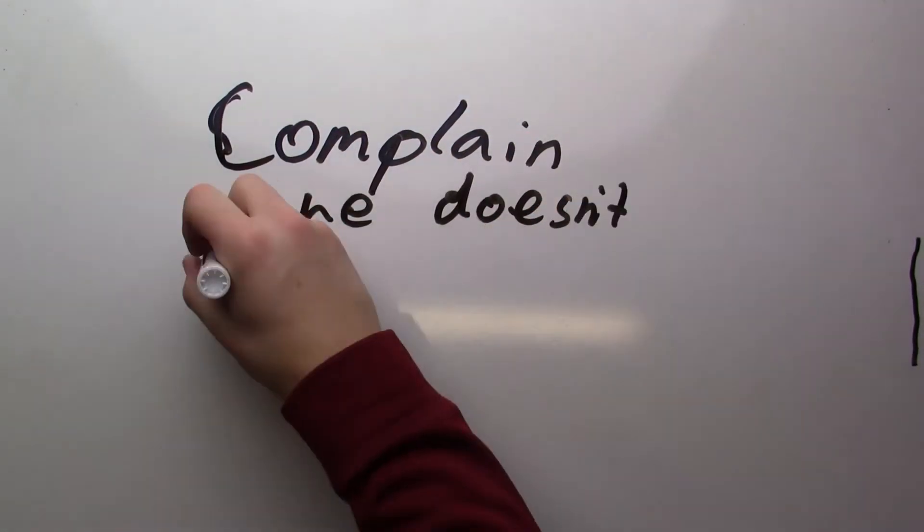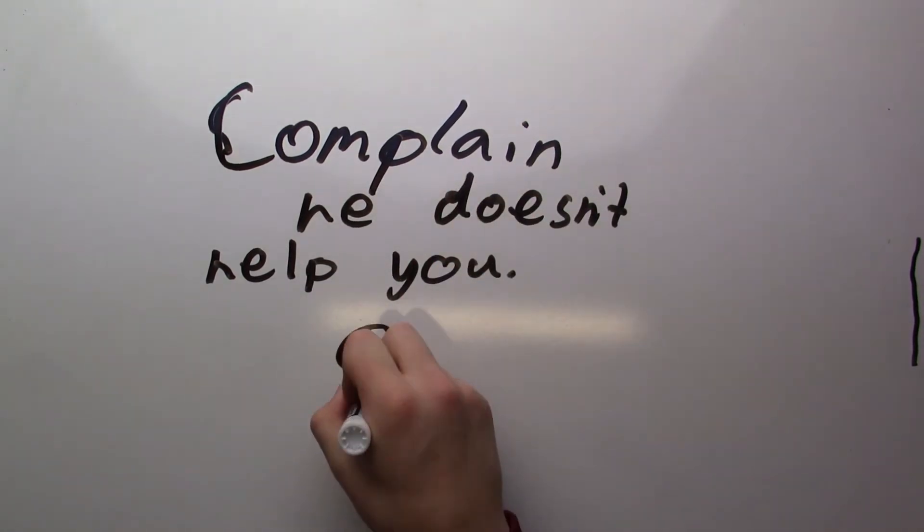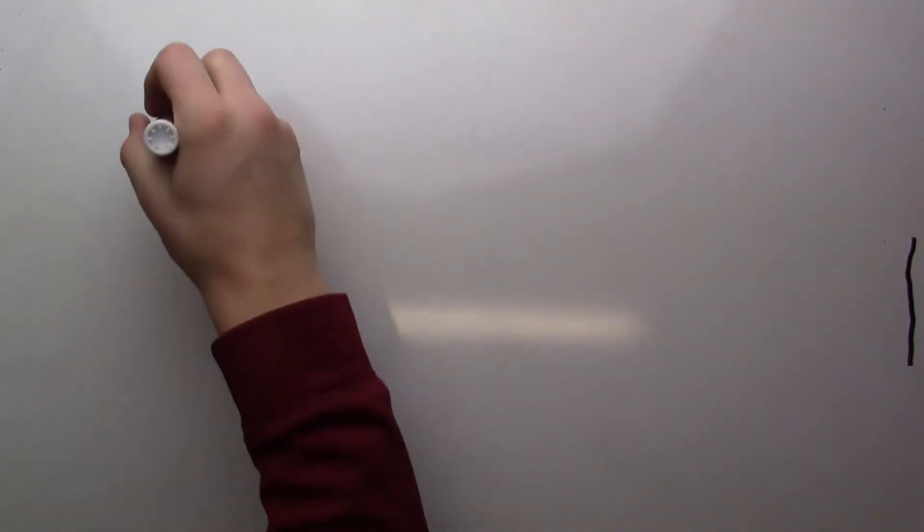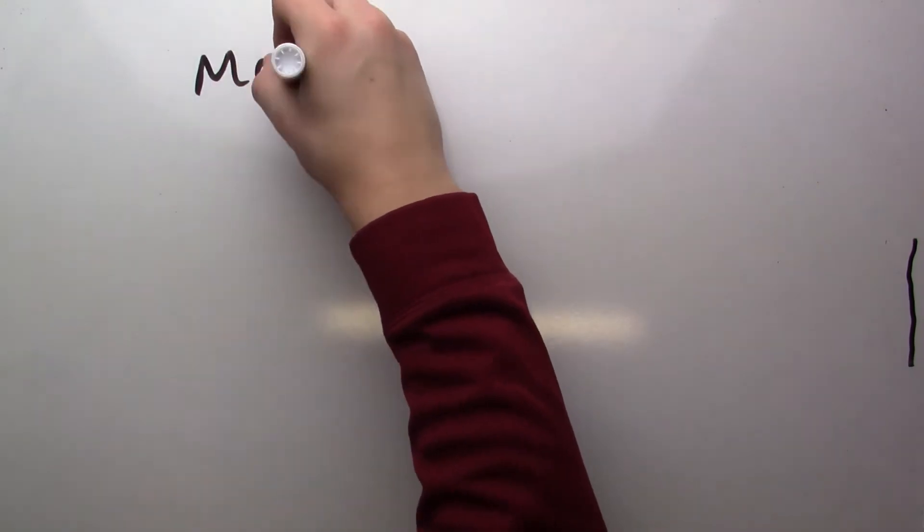Step three: complain that he does not help you with your work. Alan gets very mad at this because there is only one of him and twenty-some of us, so he can't help us all the time.